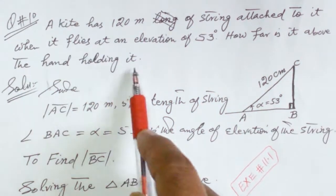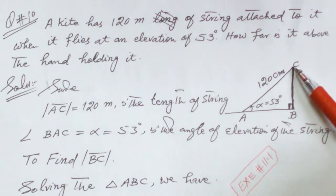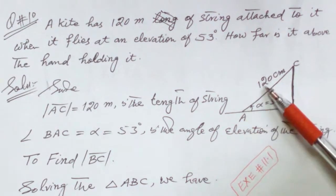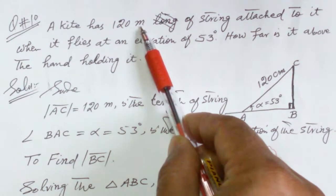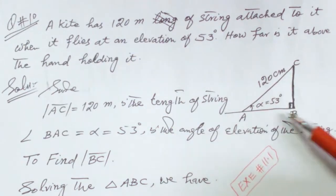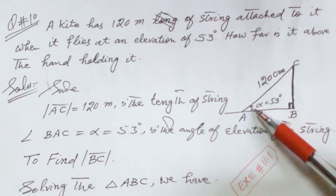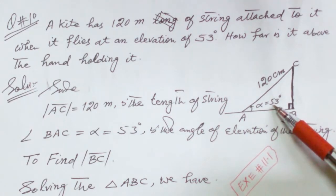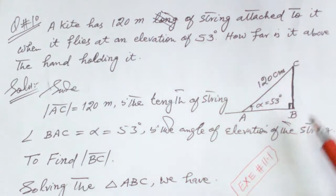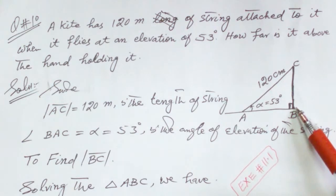The string of the kite is 120 meters. The angle of elevation of the string to the ground is equal to 53 degrees. How far is it above the hand holding? The hand holding is at point A.